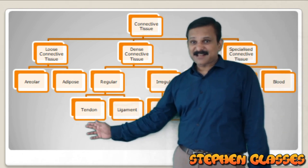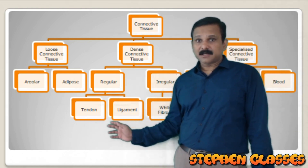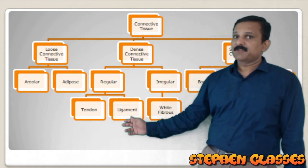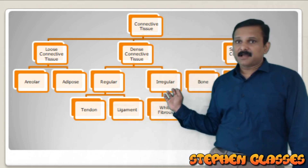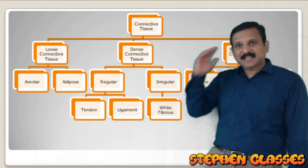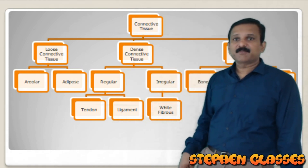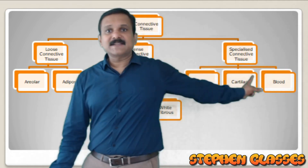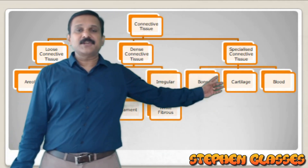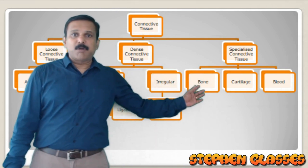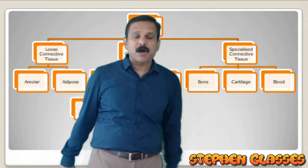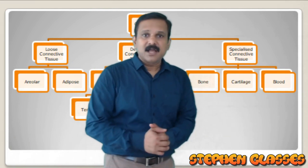Tendon connects skeletal muscle with bone and ligament connects bone to bone. Irregular dense connective tissue - for example white fibrous tissue - is found in skull bone sutures. Specialized connective tissue includes bone, cartilage, and blood. These are the three examples for specialized type of connective tissue.